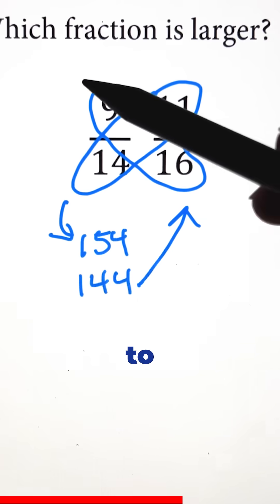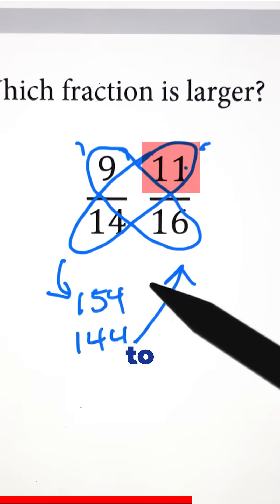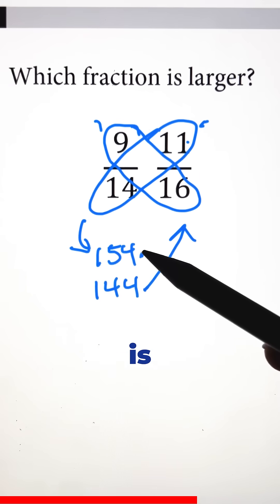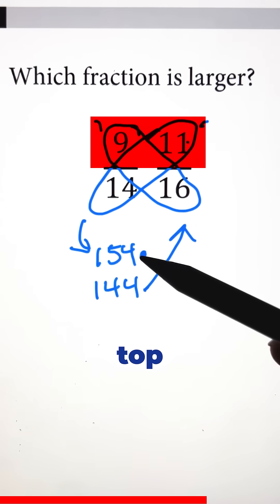So 9 times 16, the number on top is 9. And for 14 times 11, the number on top is 11. Now to see which number—for example, is 154 correlated with 9/14 or 11/16—we're going to look at the number on top.